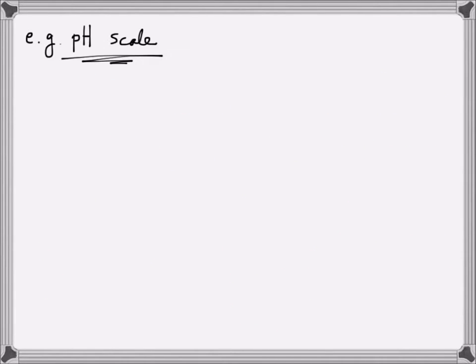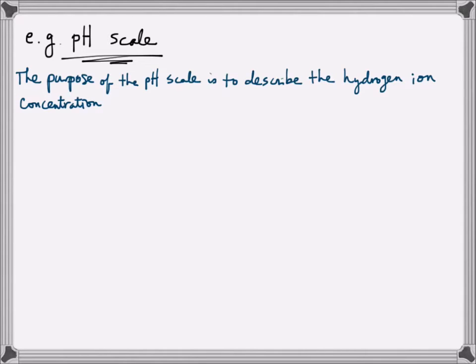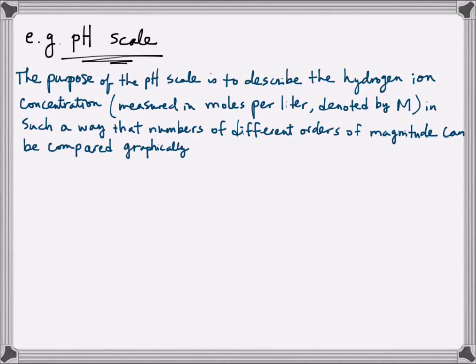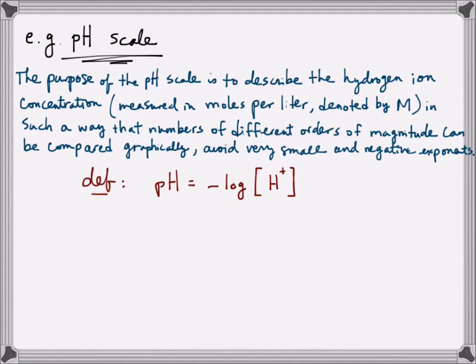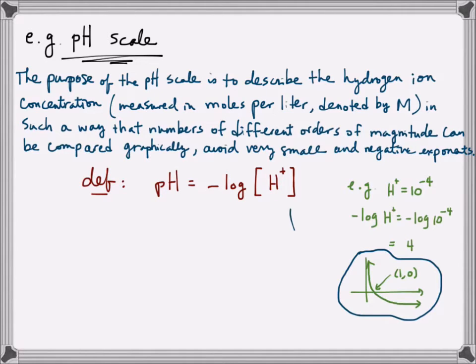Another example of a physical situation that is modeled by the log scale is called the pH scale. The purpose of the pH scale is to describe the hydrogen ion concentration measured in moles per liter, and denoted by this capital M, in such a way that numbers of different orders of magnitude can be compared graphically, in order to avoid very small and negative exponents. pH scale is defined to be the negative log of the hydrogen ion concentration. Recall, the graph of a negative log looks like this picture, which means that for numbers that are less than 1, its log value, which means its function value, is always going to be positive. That's this portion of the picture. The smaller of that value, the bigger of its log value it's going to be.